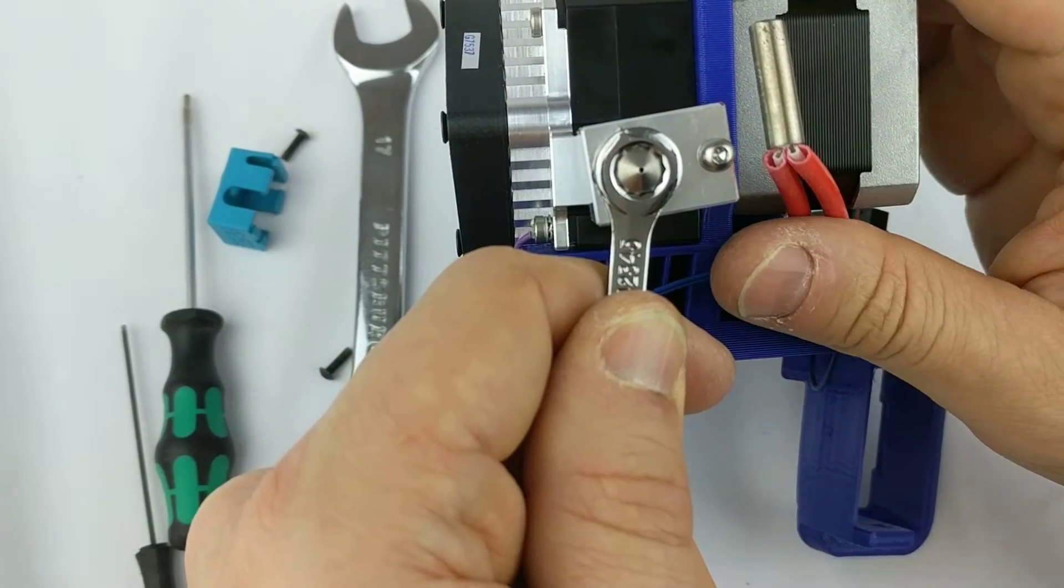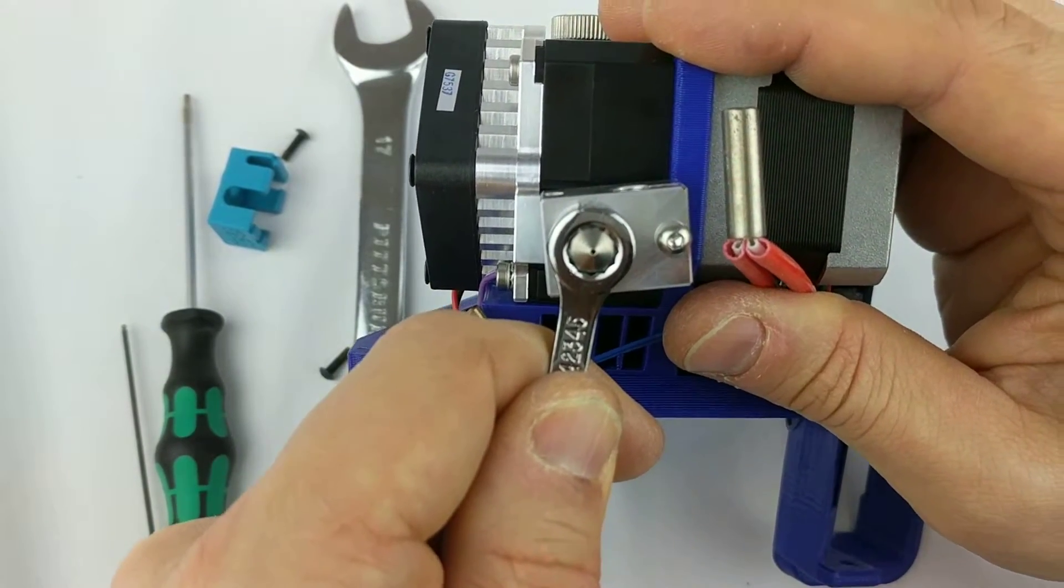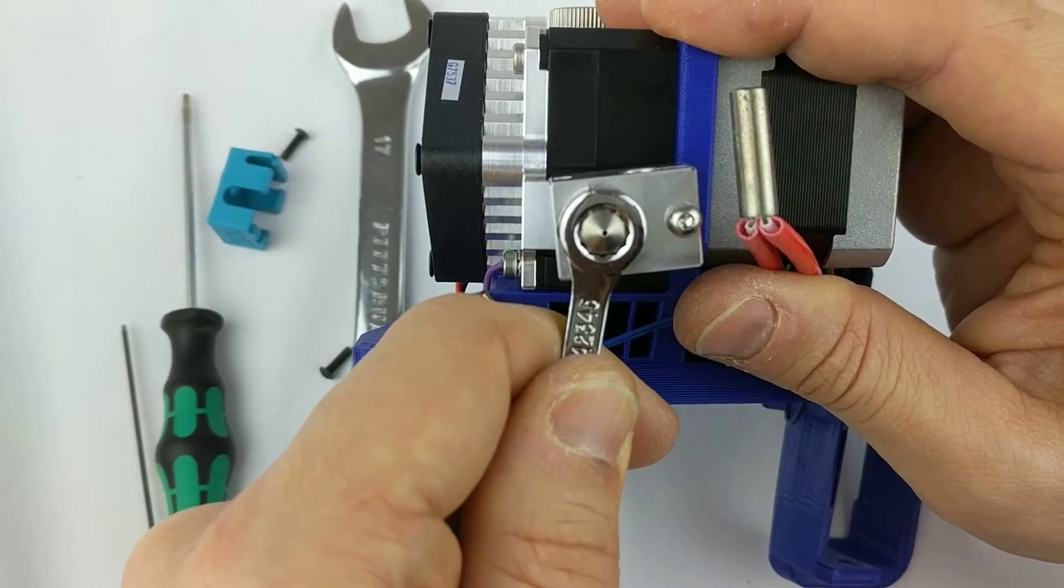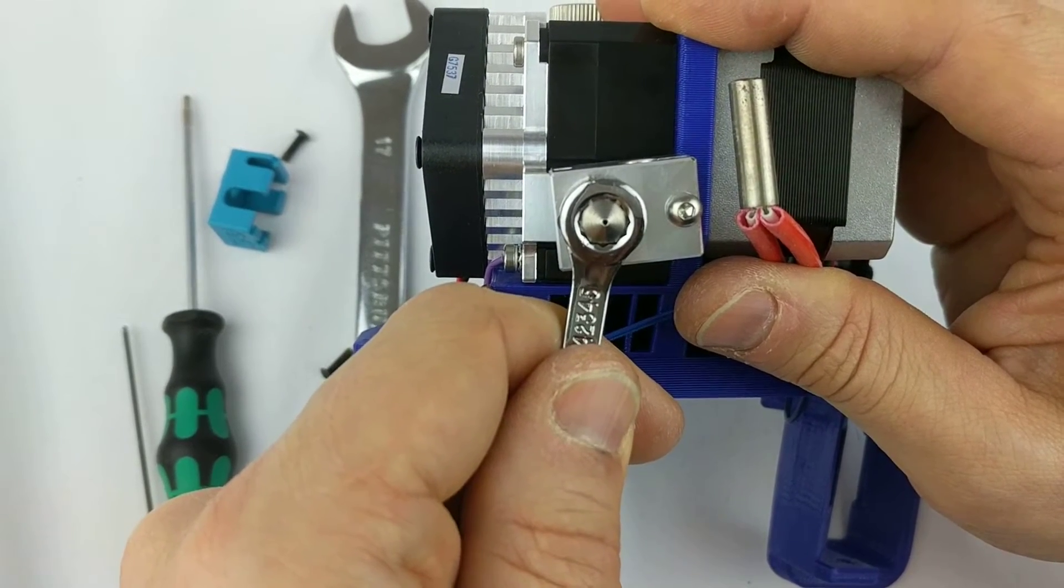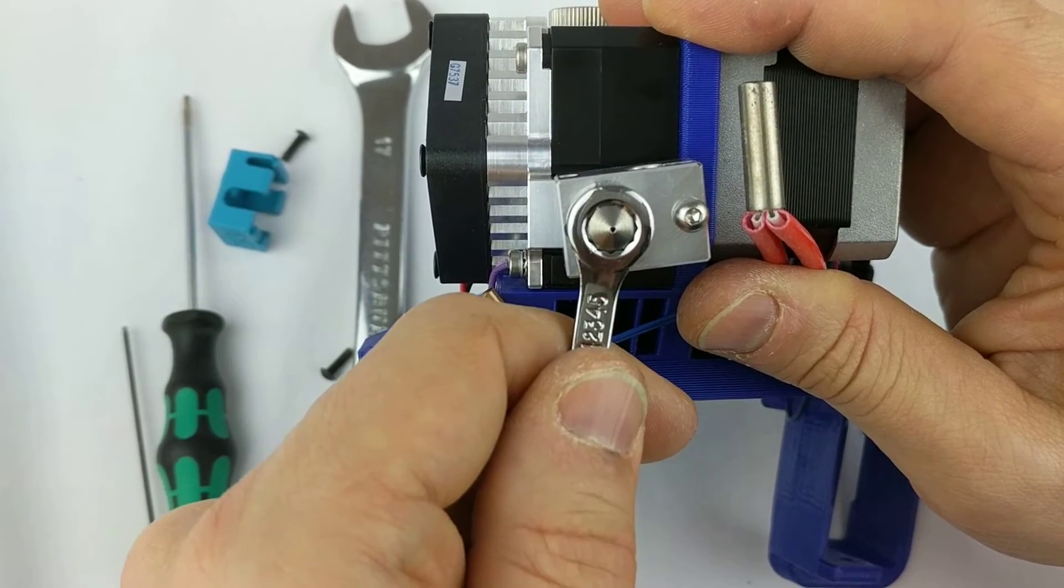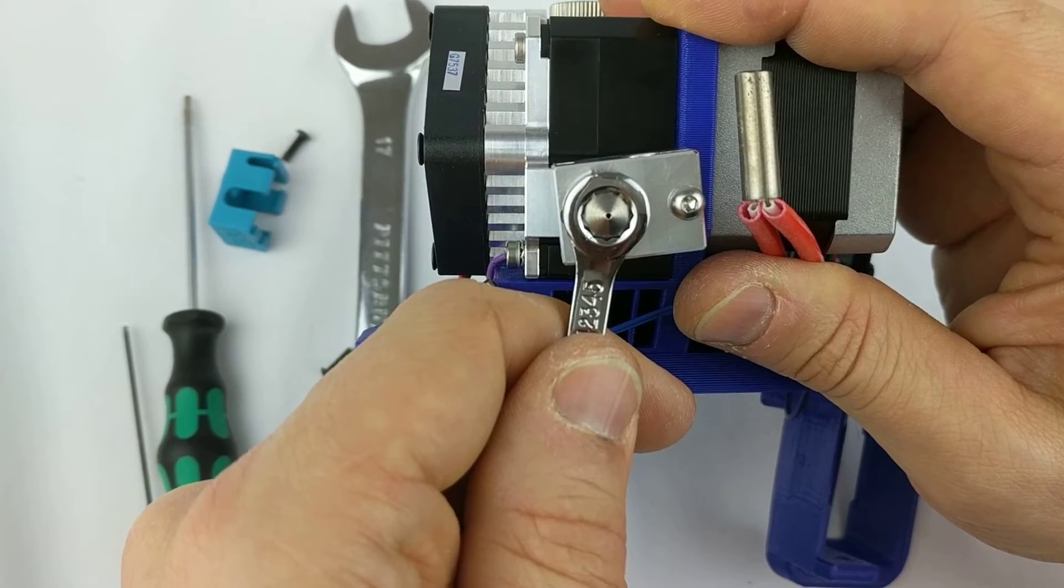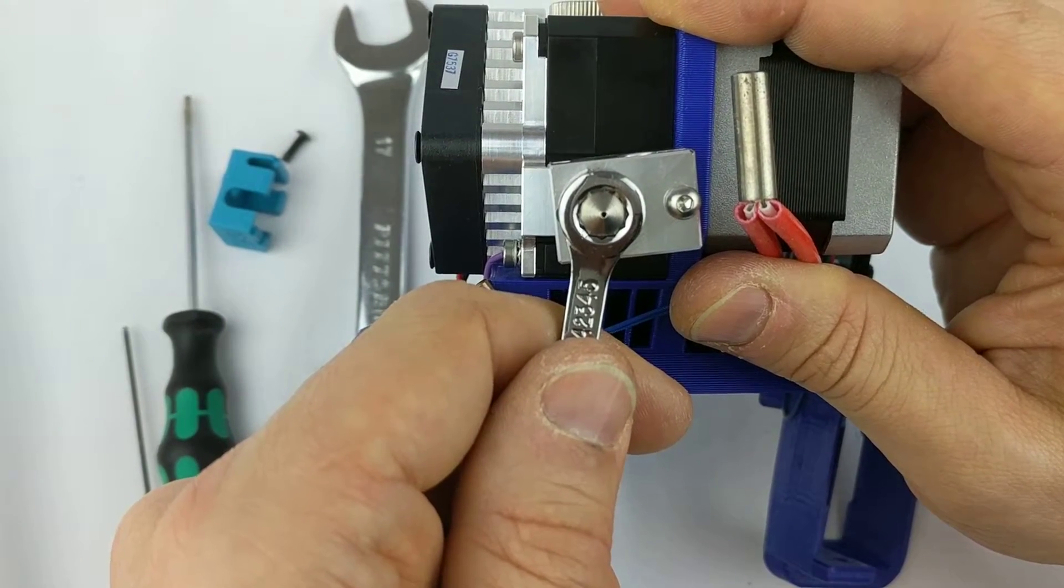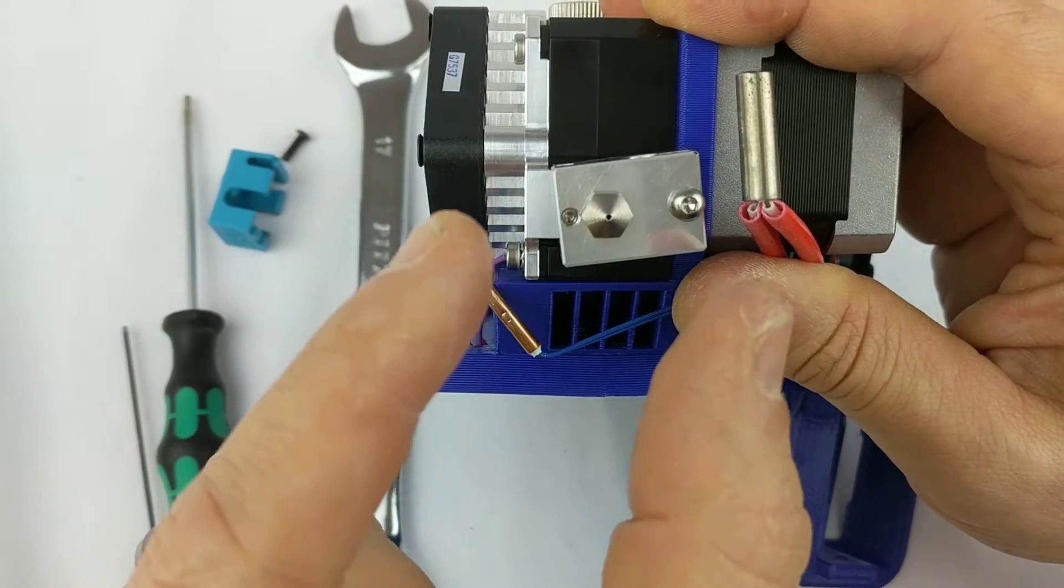See how it needs to go clockwise about another 32nd of a turn? We're going to do that with it heated on the machine. But that's how you replace a nozzle and heat break on E3D V6 hotend, and then clock it.